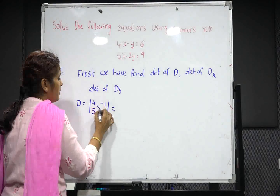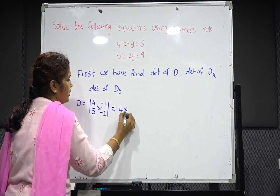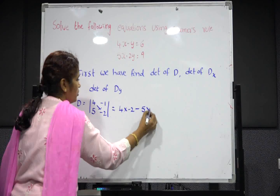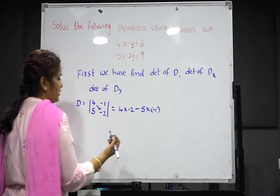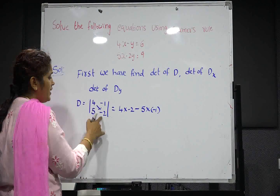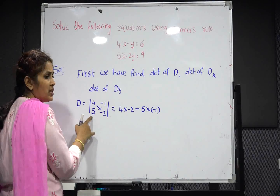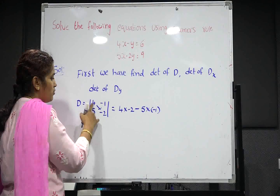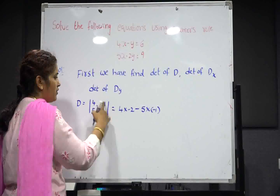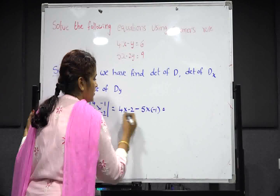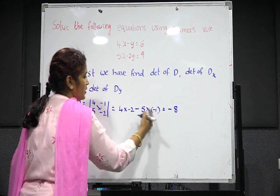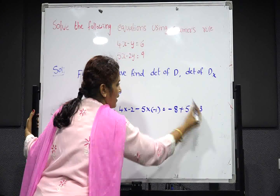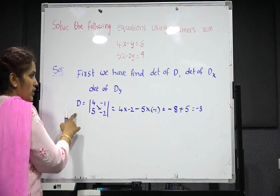Now find the determinant using AD minus BC: 4 multiplied by minus 2, minus 5 multiplied by minus 1. You know how to find the determinant of a 2 by 2 matrix — we are using the same technique. 4 times minus 2 equals minus 8, and minus times minus gives plus, so 5 times 1 is 5. That gives minus 8 plus 5, so the value of D is minus 3.